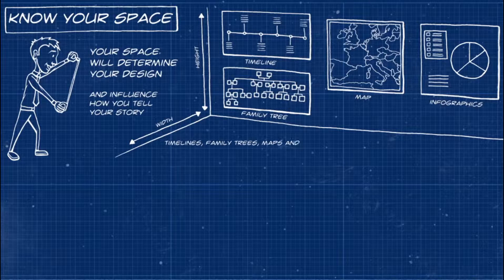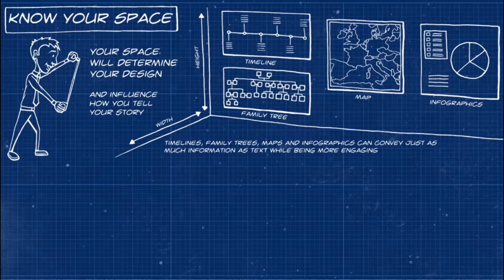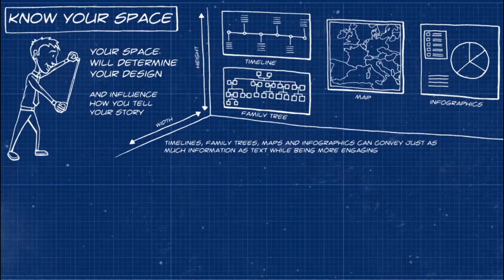Timelines, family trees, maps and infographics can all be just as informative as blocks of text, while having the advantage of being more visually interesting and often easier for audiences to digest.